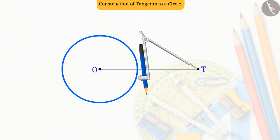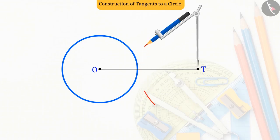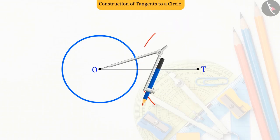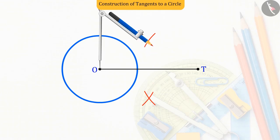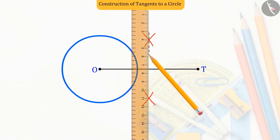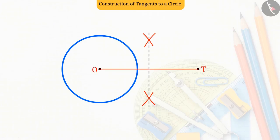So now, let us bisect the drawn line segment that is OT, from which we get the midpoint M of the line segment OT.